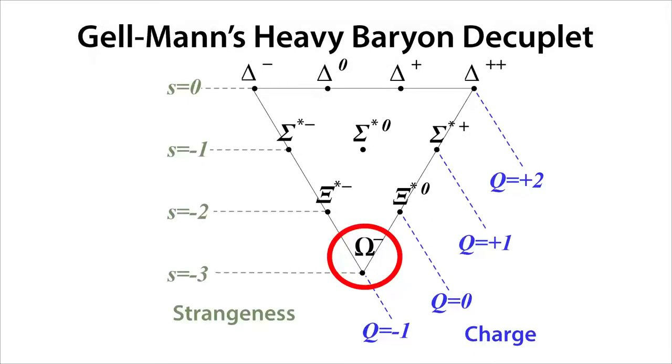Because of the structure of the masses, as he went down the diagram the masses increased in fixed steps, he made a prediction for the mass of this missing omega baryon. Three years later, in 1964, the omega minus baryon was discovered and it had a mass that agreed with Gell-Mann's prediction and it had a strangeness quantum number of minus three. So Gell-Mann's eightfold way clearly worked. The problem was, just like the early periodic table, nobody understood where the structure came from.